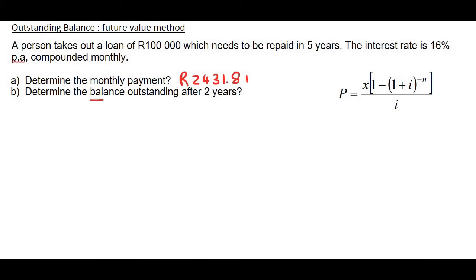Now we are going to work out the balance outstanding. Do you know what balance outstanding means? It's in the word. It's the balance, it's outstanding. So how much money do you still owe the bank? If you are using the future value method, which is what this video is all about, then you need to do two things.